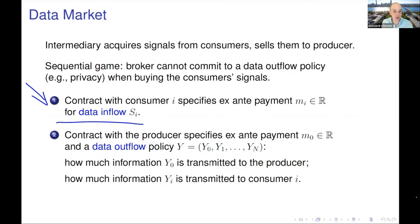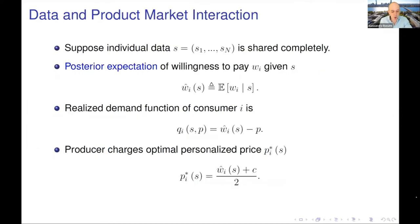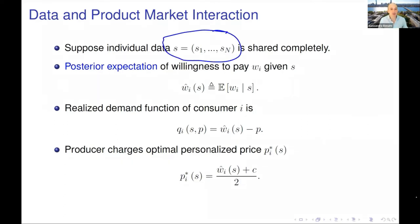With that information structure in hand, the broker can then contract with the producer and specify a fixed payment m_0 in exchange for a data outflow policy. The data outflow policy specifies who is going to receive what signal — how much information the producer gets, but also how much information about other people's signals is shared with each individual consumer. The producer pays for this, and they care about it because they care about how informed their consumers are when making their purchase decisions.